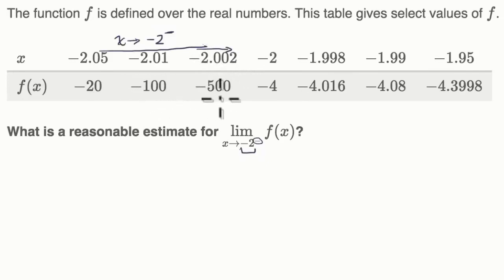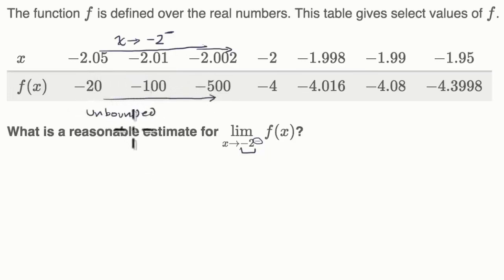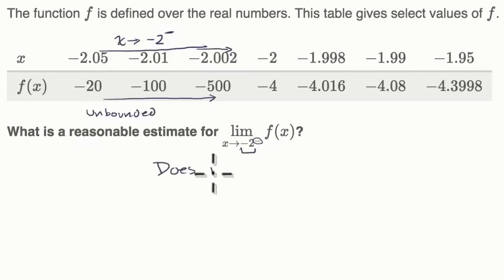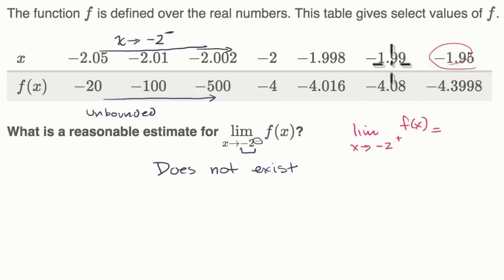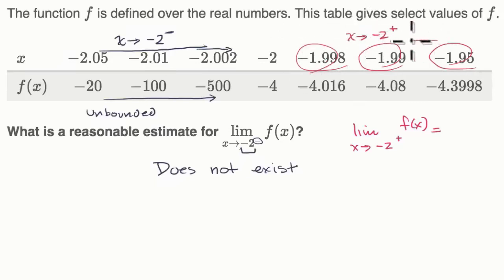It looks like this is becoming infinitely negative, so technically it looks like this is unbounded. If this was a multiple choice question, you would say the limit as x approaches negative 2 from the left does not exist. If someone asked the other question — what is the limit as x approaches negative 2 from the right of f of x — then here are values approaching negative 2 from the right.